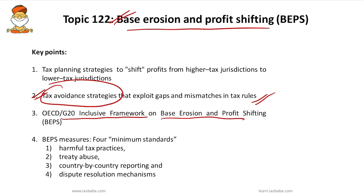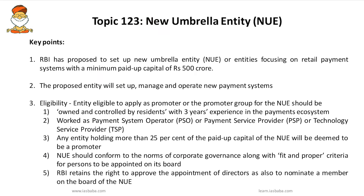The BEPS project provides four minimum standards: harmful tax practices, treaty abuse, country-by-country reporting, and dispute resolution mechanism. Remember that BEPS is a corporate tax planning strategy used by multinationals to shift profits from higher-tax jurisdictions to lower-tax jurisdictions.